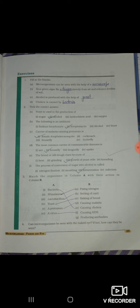Second, tick the correct answer. Yeast is used in the production of alcohol. The following is an antibiotic: streptomycin. Carrier of malaria causing protozoan is female anopheles mosquito. The most common carrier of communicable disease is housefly. The bread or idli dough rises because of growth of yeast cells. The process of conversion of sugar into alcohol is called fermentation.